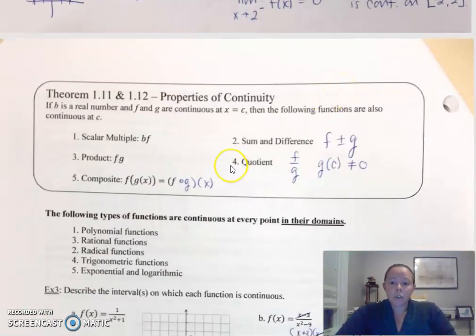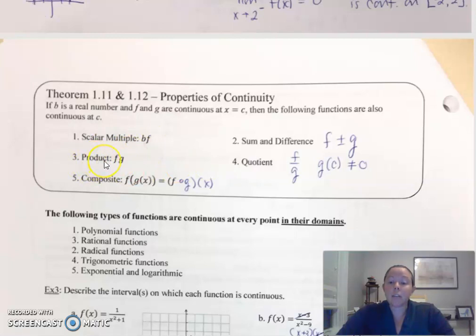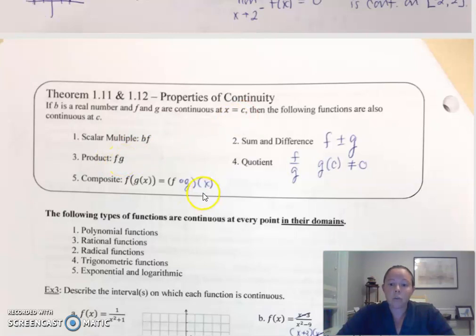Properties of continuity. When you start to multiply functions or add functions together, what happens? Multiplying by a scalar, you're still continuous. Given that f and g are continuous functions at C: multiplying by a scalar is still going to be continuous at C. Multiplying functions, you're still good to go. Composite functions, sum and difference, quotient — as long as the denominator does not equal zero.